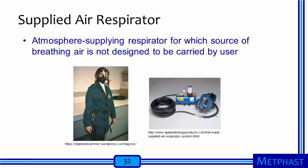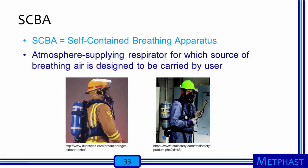Moving on to atmosphere-supplying respirators, a supplied air respirator uses an air compressor to supply air through a long hose to an air regulator attached to a tight-fitting facepiece. A self-contained breathing apparatus, or SCBA, is an atmosphere-supplying respirator for which the breathing air source is carried by the worker in a tank on his or her back, as used by firefighters. There are also combination respirators—supplied air respirator systems that include a small escape tank worn on the hip. If the air coming through the hose stops for any reason, a warning sound activates and the regulator automatically switches over to the small escape tank to give the wearer enough time to exit the dangerous atmosphere.